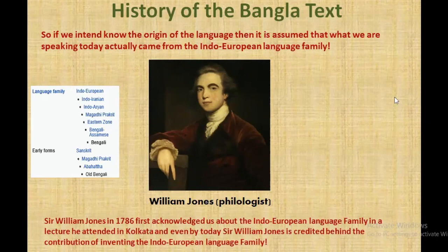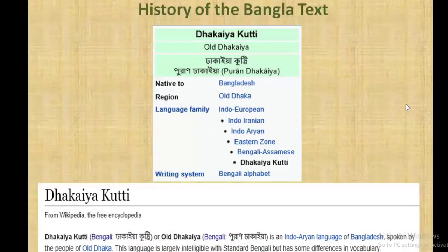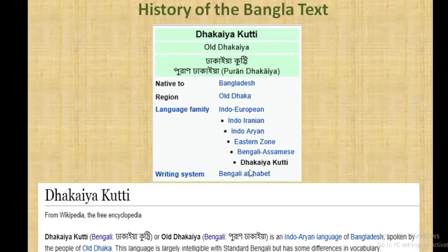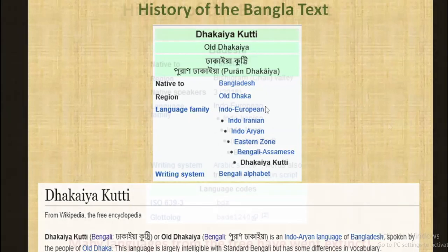Without his formidable contribution, we might have witnessed the prosperity of the Bengali language much more on delay — so a huge applause for him. This is one of the languages that came from the Indo-European family tree: the Dakaya Kutti, which is basically the language of old Dhaka, Puran Dhaka. They have their own dialects, which are quite different from those spoken by someone living in Dhanmondi or Gulshan for a long time. But the Indo-European family tree is still the common ancestor of this.